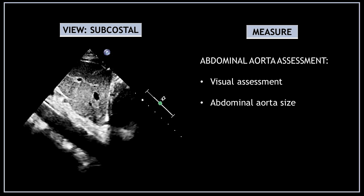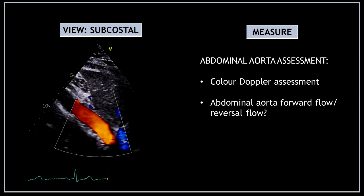Using a different angle you can find the abdominal aorta. First visually assess the abdominal aorta and measure its size. Then use color Doppler to assess the abdominal aorta forward flow and visually check for any reversal flow.